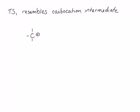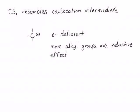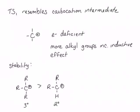Remember that a carbocation is electron-deficient — this carbon does not have a complete octet. Therefore, just like a radical center, the addition of alkyl groups to the electron-deficient carbon is stabilizing through the inductive effect. Therefore, the most stable carbocation will be a tertiary carbocation, followed by a secondary carbocation, followed by a primary carbocation, followed by the methyl carbocation. More stable carbocations are formed through more stable transition states that are lower in energy, and will therefore be formed more quickly.